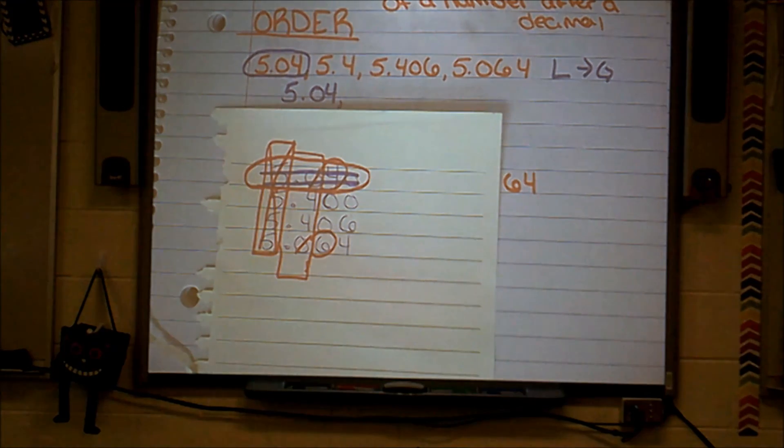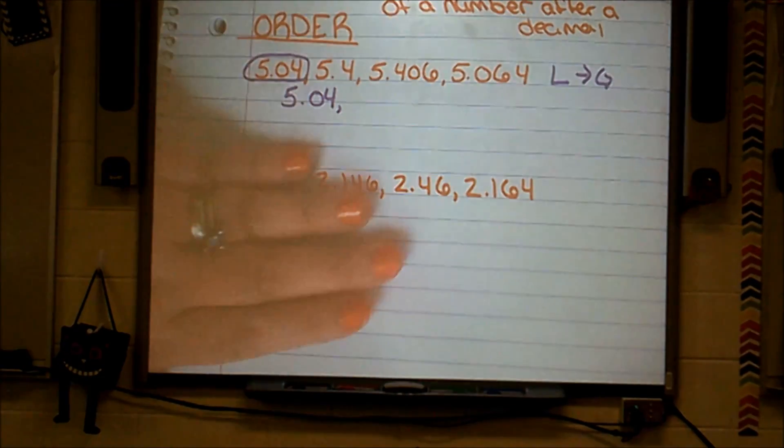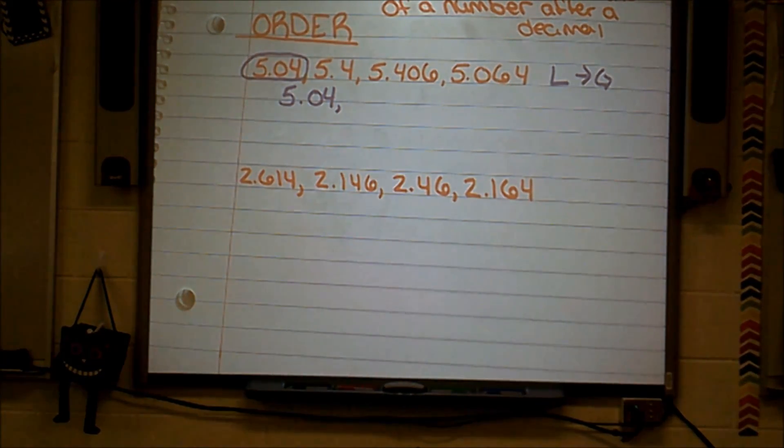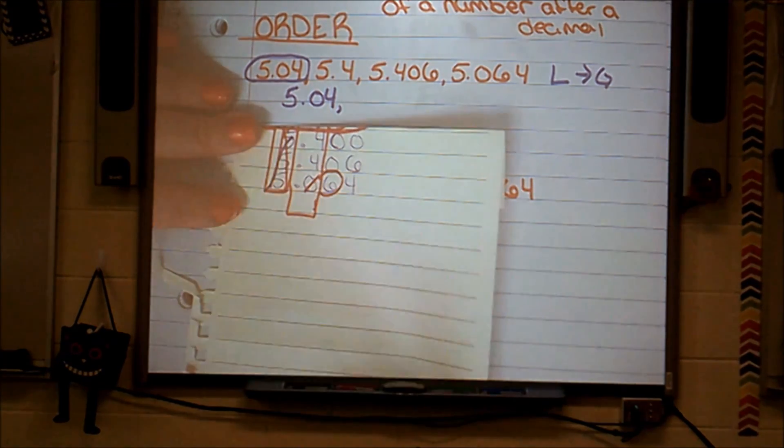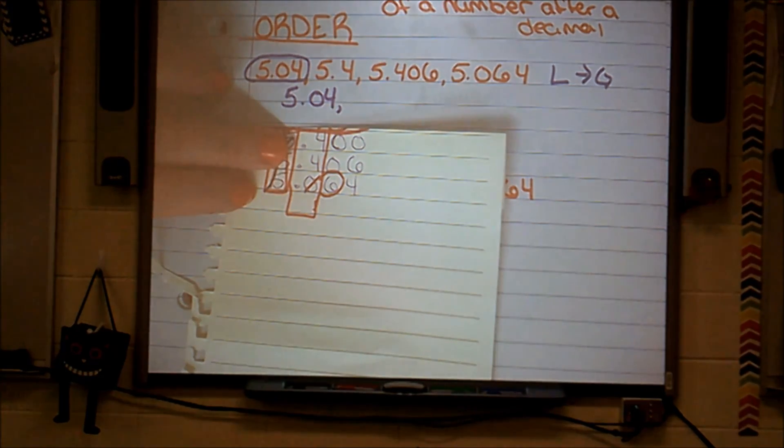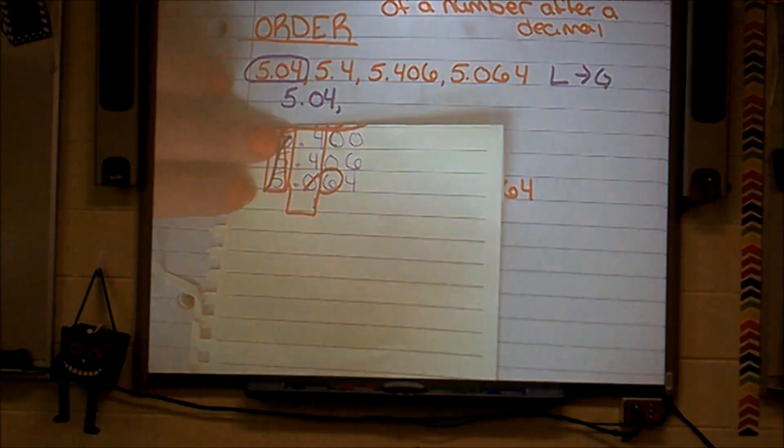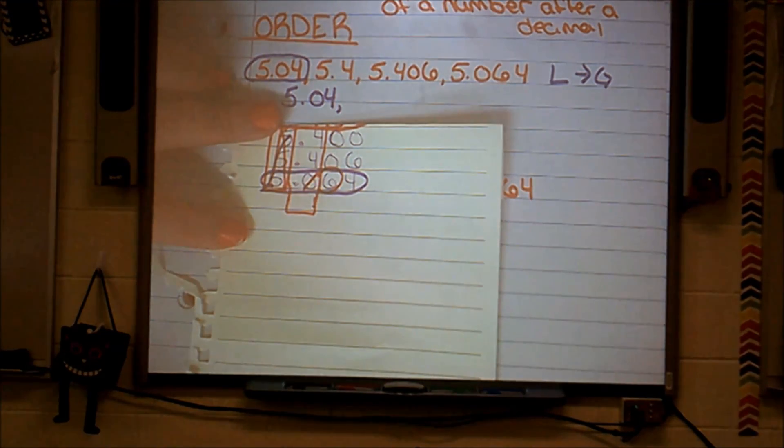And then there were three. So I look at these three numbers and again, now out of these three numbers, I'm going to determine which one is the teeny tiniest number of all these numbers. So I go back and I say, well, they're still all five. That didn't change. Now I have a four, a four, and a zero. Which one is the teeny tiniest number? The teeny tiniest number is zero. So that is my next number. 5 and 64 thousandths.